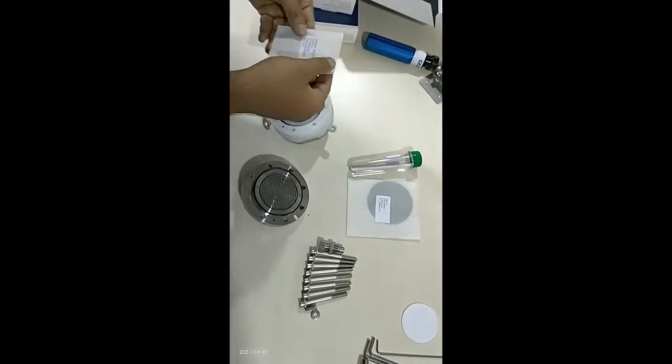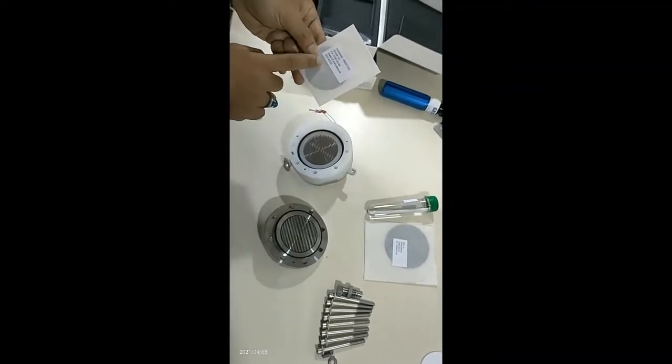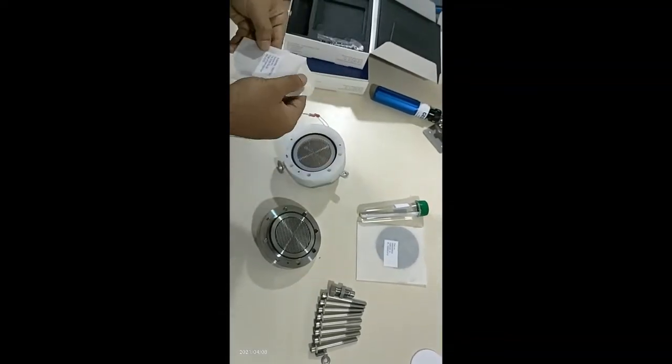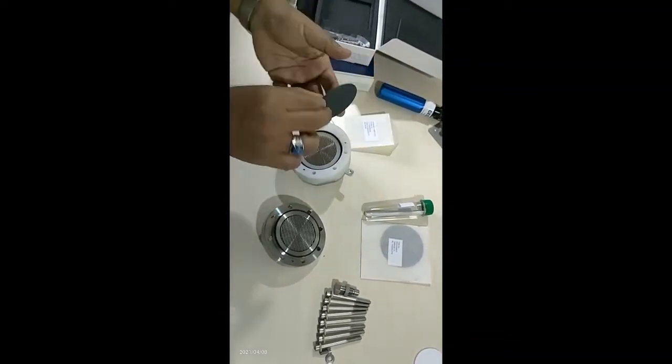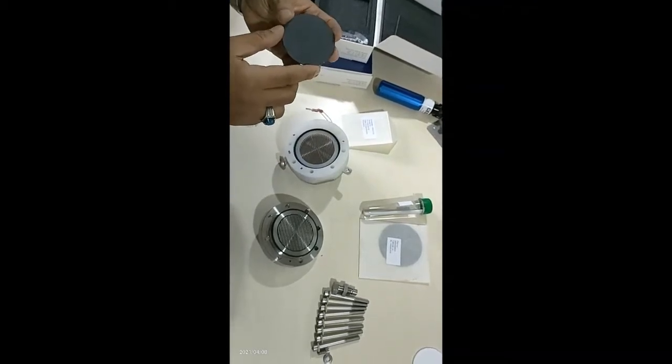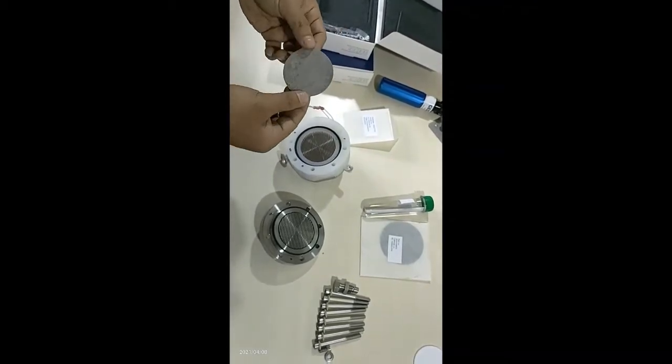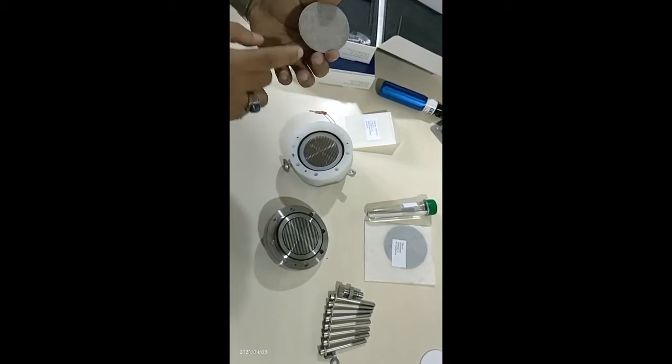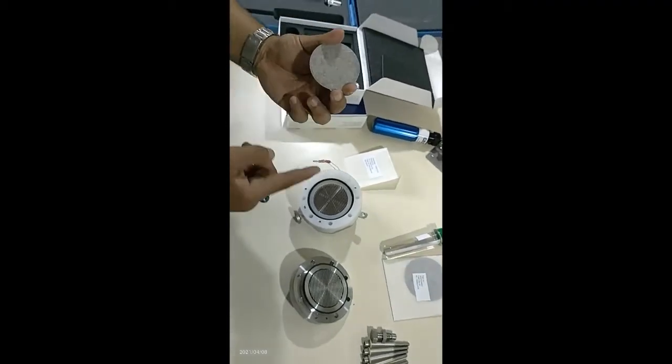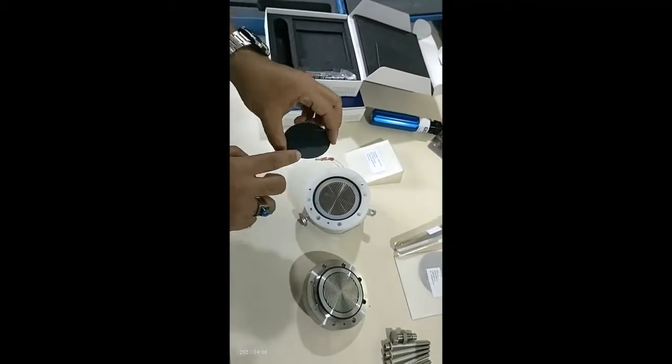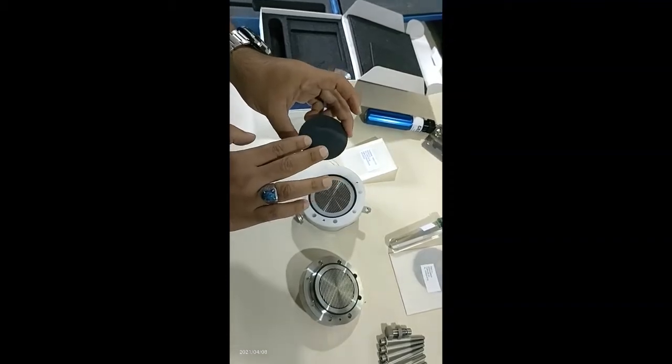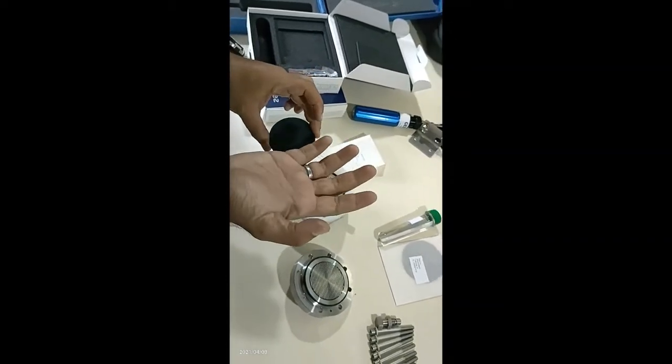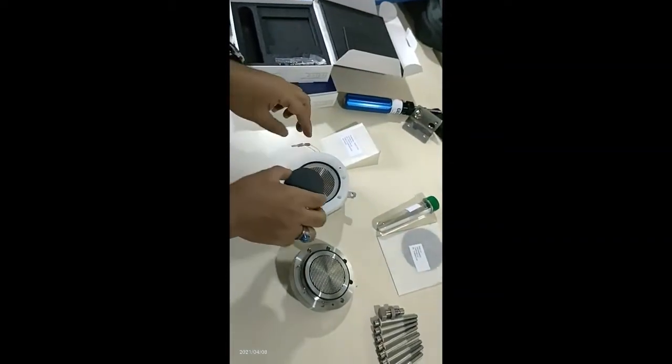Okay, first step: we install the node in the chamber. The node has two sides - the dark side and the light side. The light side goes against the chamber, and the dark side goes against the membrane, like this.